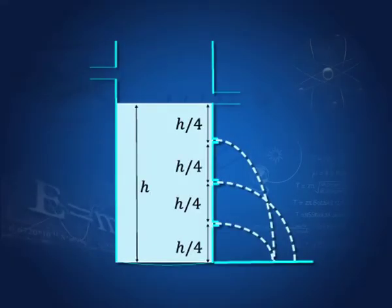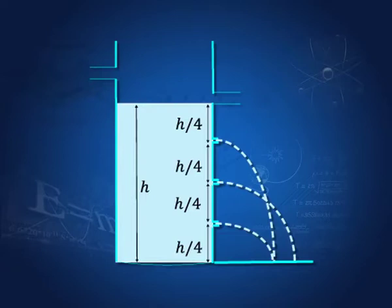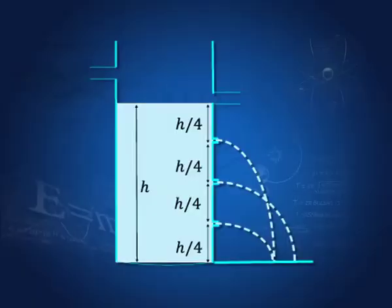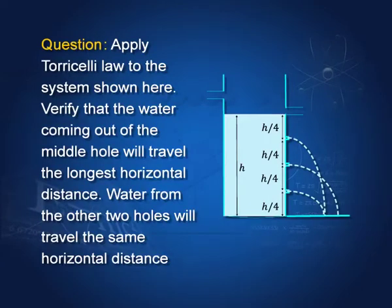Suppose again we take that vessel and we make three holes. The first is at depth h by 4, the second is at depth h by 2, the third is at depth 3h by 4. We make three holes and let the water come out. You must have done this activity in your classroom, in class 8 or 9 or maybe 10. I have taken this up because in most textbooks this figure is drawn wrongly. So I am offering an explanation of Torricelli law.